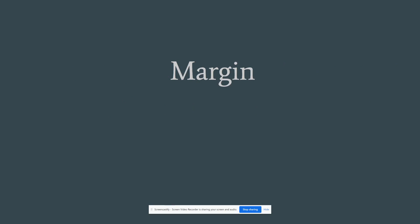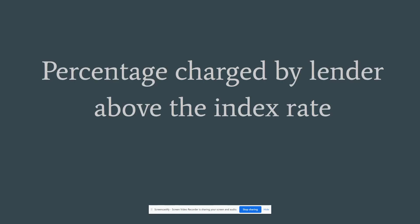Margin. This is the percentage charged by a lender above the index rate. So if the index rate is 2% and they charge 4%, then the margin is 2% — they're getting an extra 2% on top of the index.